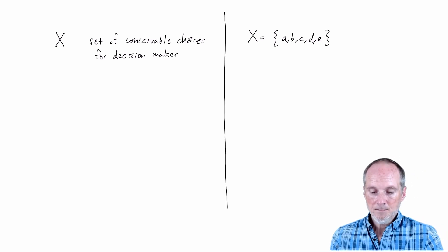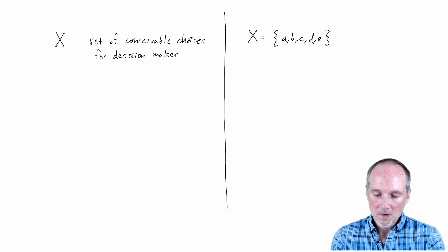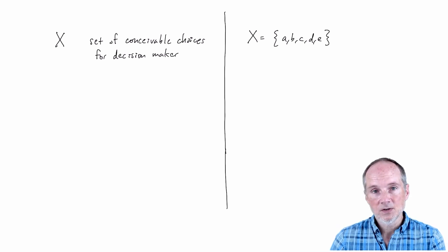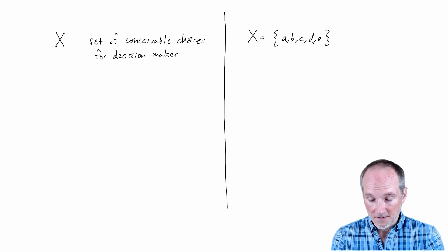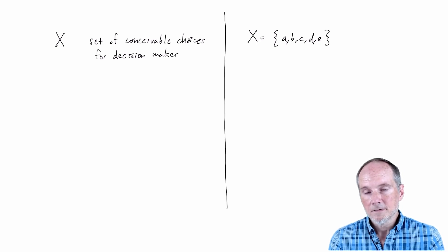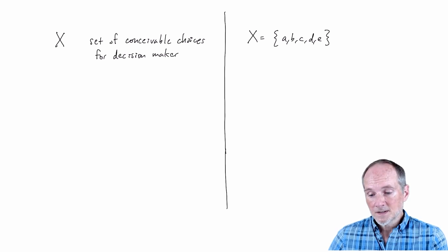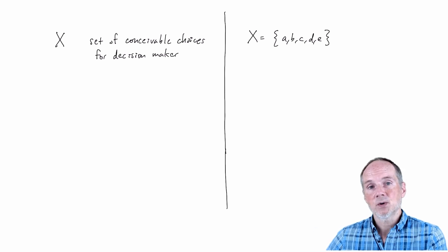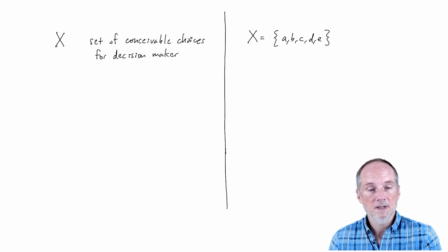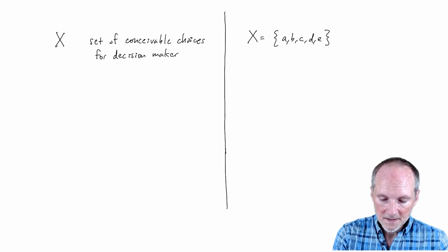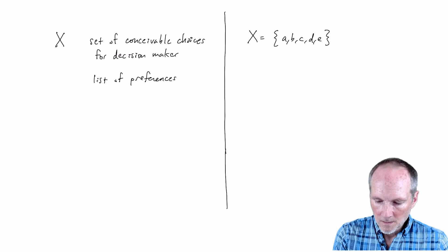The next thing we need is... I mean that's a model right there but it's pretty boring. It's just a set of things. Eventually what I want to talk about is how a decision maker chooses from the set. In economics and political science we approach this from a rational choice perspective which means we're going to think about the decision maker as having some preferences and those describe the motivations of the decision maker. The decision maker is making a choice to get the best thing they can. So part of this model needs to describe the preferences of the decision maker. So the next thing will be a list of preferences for the decision maker.